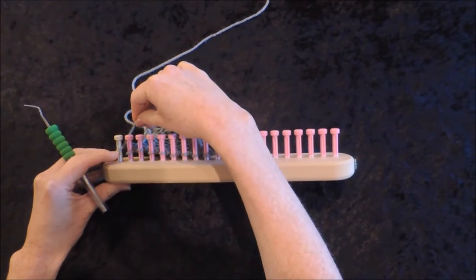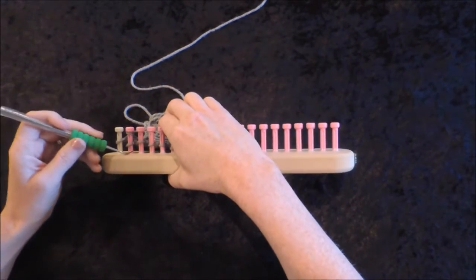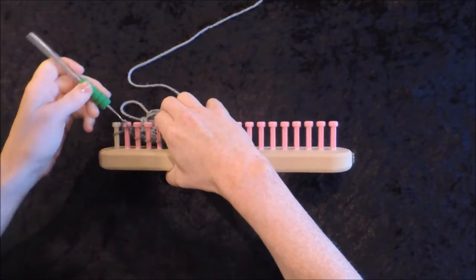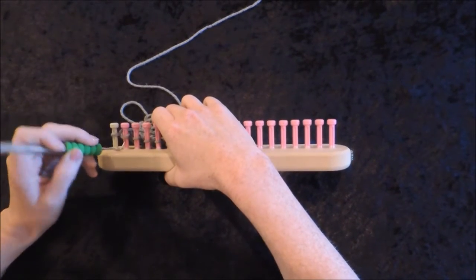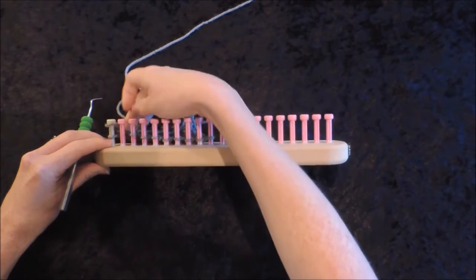And now you're going to start on peg 2 and e-wrap it, pick over peg 2, and then take the loop off of peg 2, move it to peg 1.